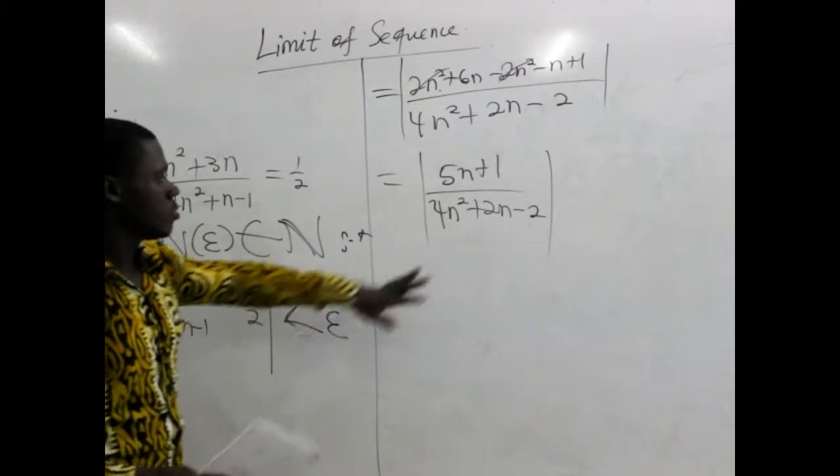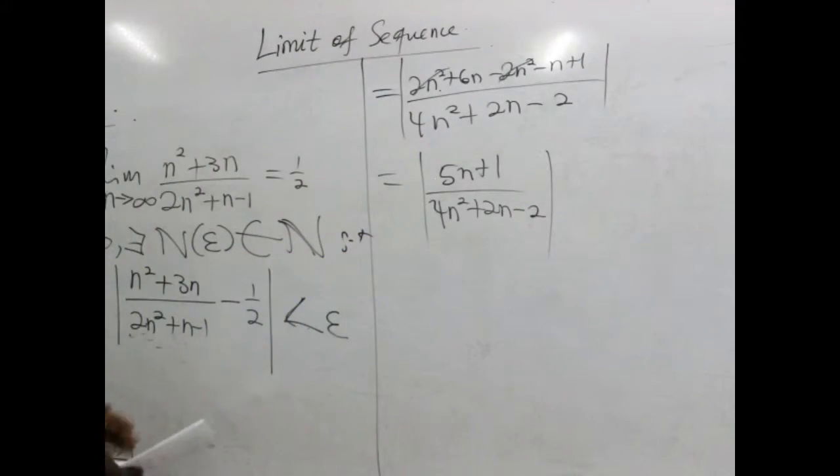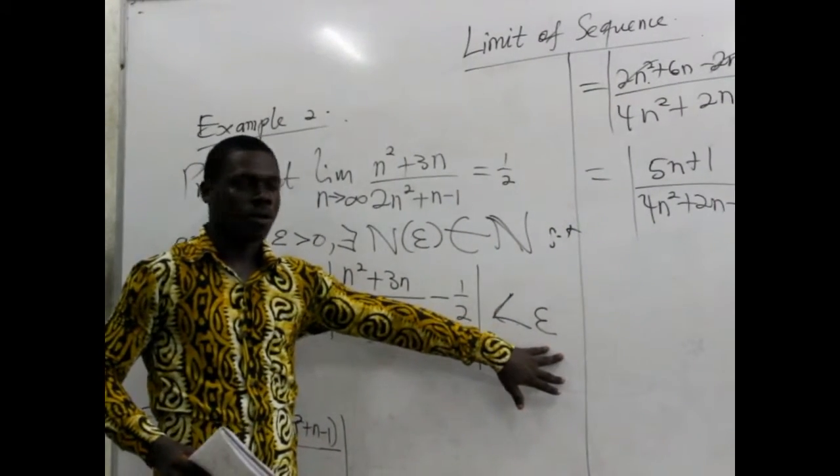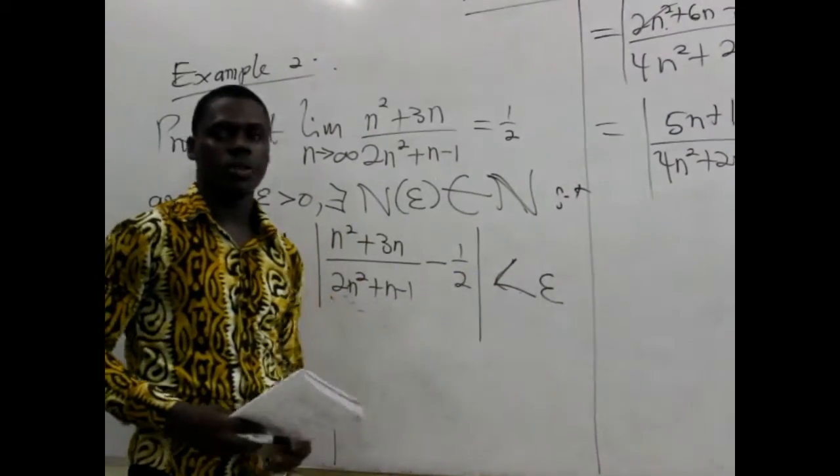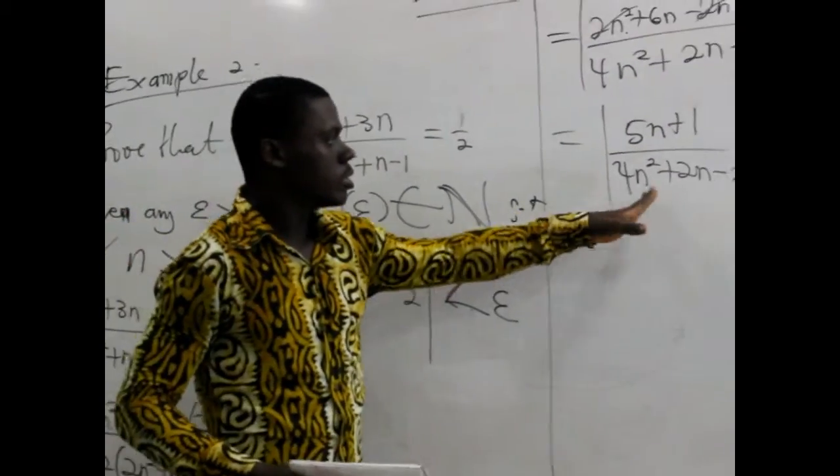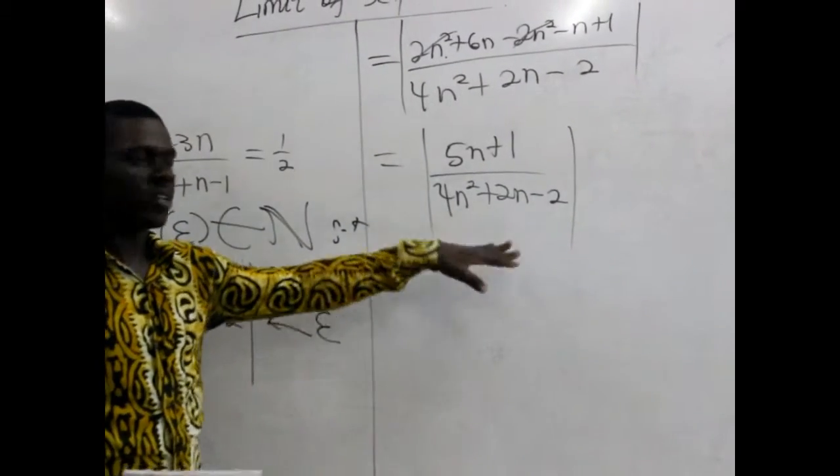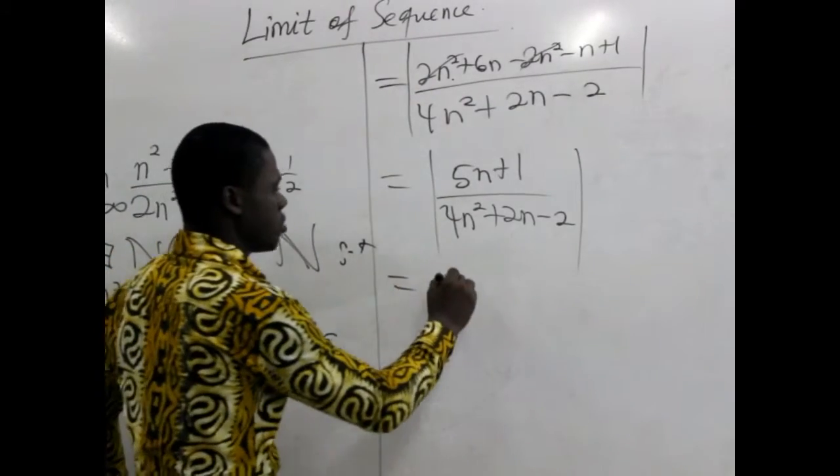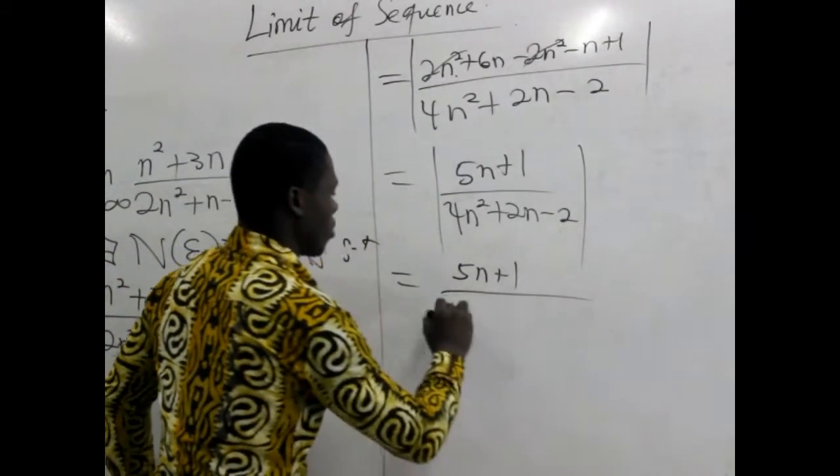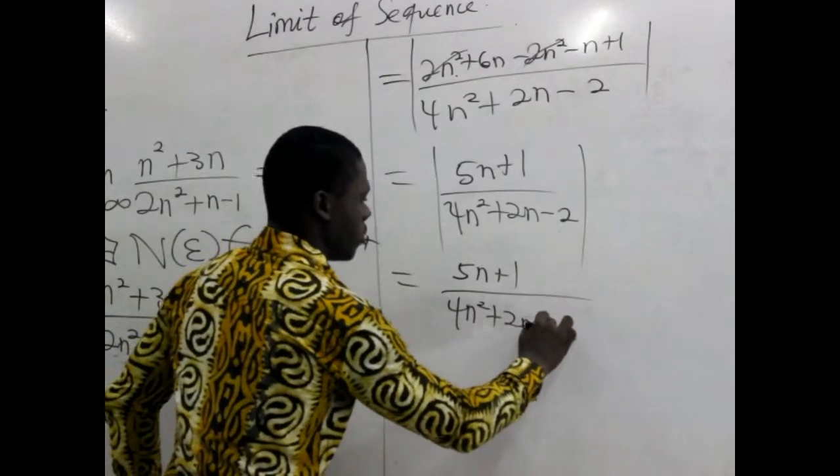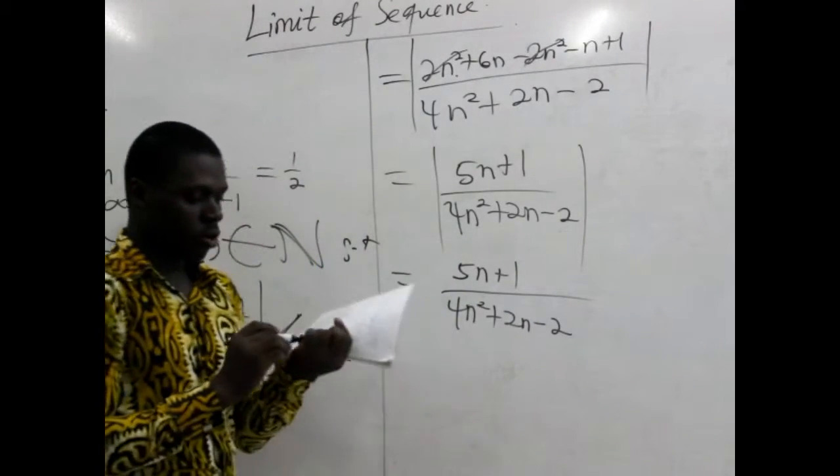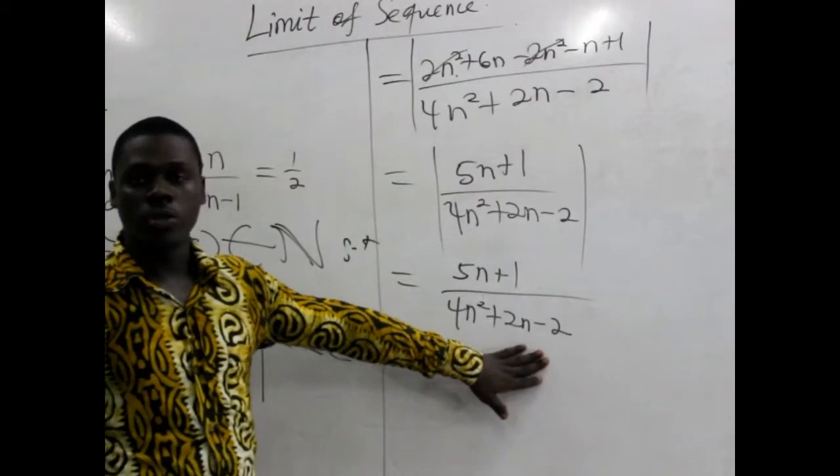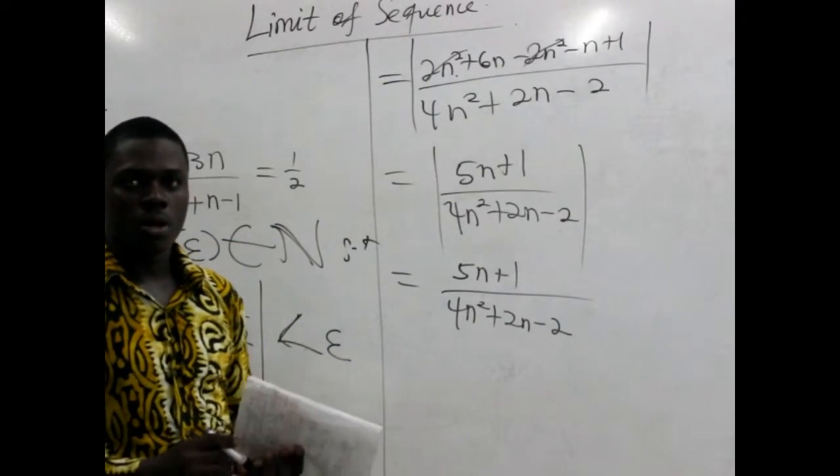Now, at this point, we want to introduce our inequality sign. Because without that, we will not be able to show that all this is less than epsilon. We have this to be the same as 5n plus 1, we have 4n squared plus 2n minus 2. Because for natural analysis, any value that we establish for n will get positive results, as we have here.